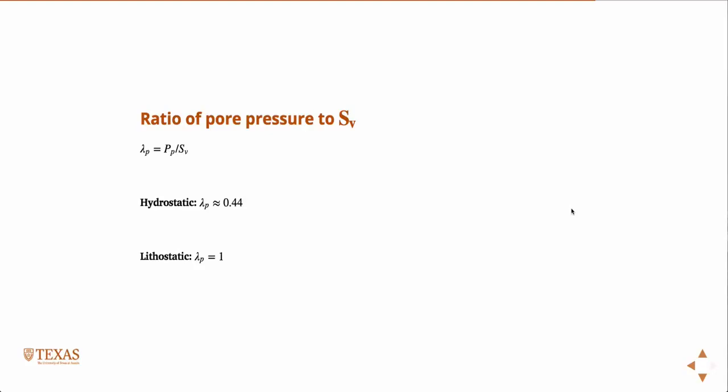So these are the two idealized cases, and these are things you should memorize. When you hear hydrostatic, we have a hydrostatic pore pressure — that means 0.44 psi per foot, or the ratio lambda is 0.44. And when you hear lithostatic — again, this can never be achieved in reality, but sometimes we use it as an approximation — the ratio of the pore pressure to the vertical stress is 1. And you can never have anything greater than 1.